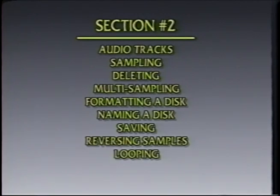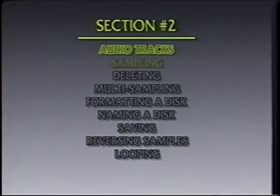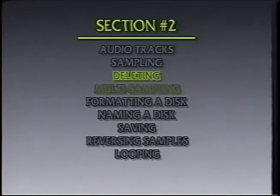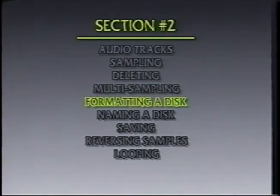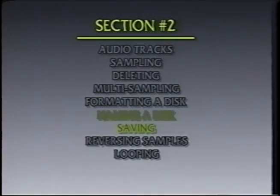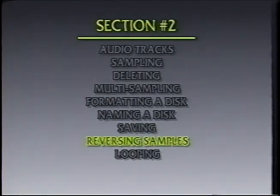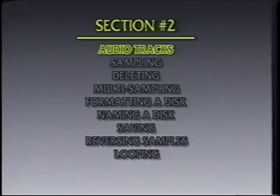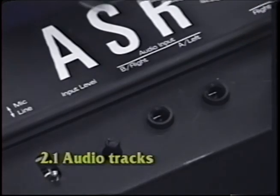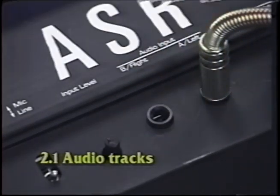In section 2, we'll cover audio tracks, sampling, deleting, multi-sampling, formatting a disk, naming a disk, saving instruments, reversing samples, and looping. An audio track is the method for getting audio input to the ASR-10 for sampling. It also allows you to use the built-in digital effects of the ASR-10 to process external signals.